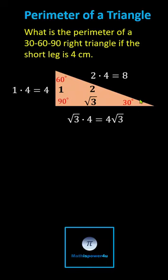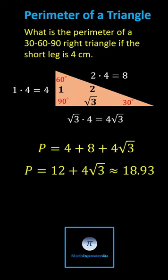Now we find the perimeter by summing the lengths of the three sides. The perimeter equals four plus eight plus four square root three. Combining like terms, the exact perimeter is 12 plus four square root three, which is approximately 18.93 centimeters.